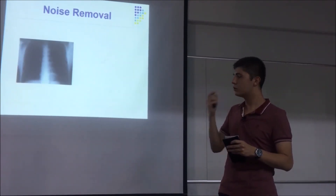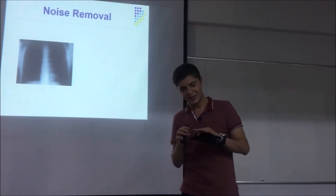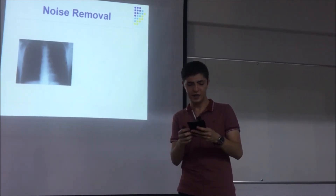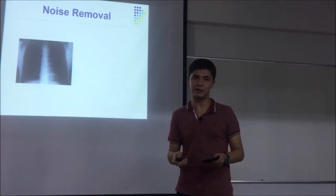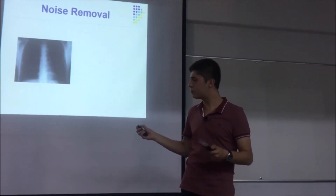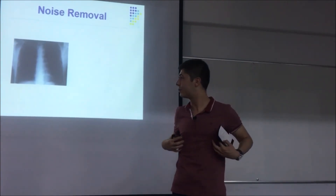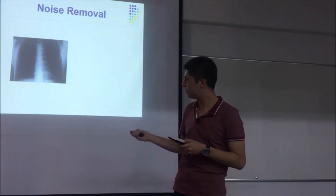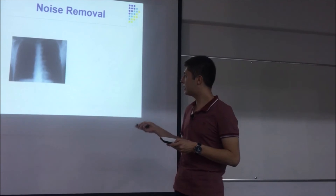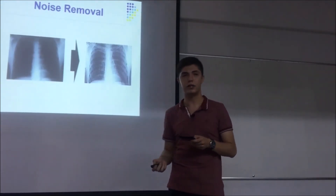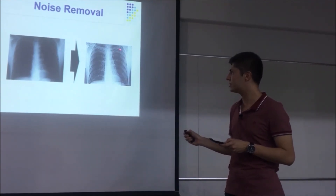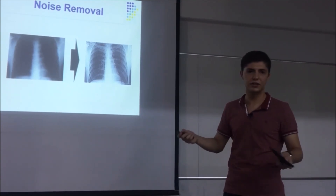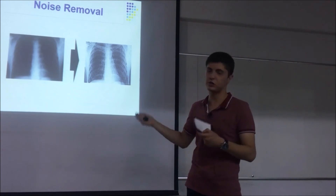Another technique is noise removal, which means cleaning the blurs and picture trails on images. As you see, there is a ribcage — the structure in our chest. We can see the bones, but they are not very clear. But if you process the image with image processing, it will look much clearer. You can see all the bones easily, and if there is a broken bone or something like that, doctors can identify it and help the patient.